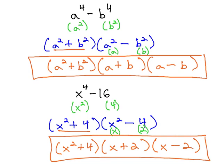Difference of 4th powers becomes a sum and difference of squares, and the difference of squares can factor to another sum and difference.